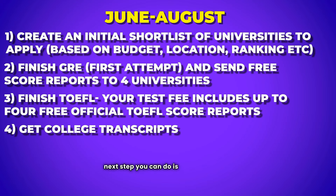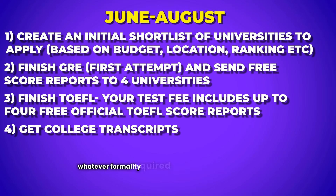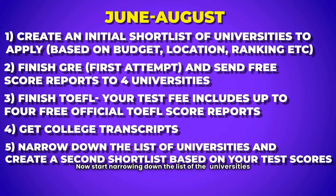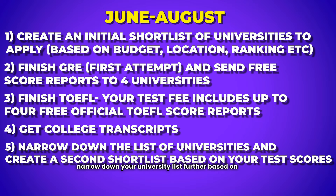Next, get your college transcripts — especially if you've already graduated, there's no reason to delay, because these formalities can take time. Talk to your college and complete whatever is required to get your transcripts. Then start narrowing down your university list and create a second shortlist based on your test scores. Once you have an idea of what your GRE and TOEFL scores look like, you can refine your university list further based on those.